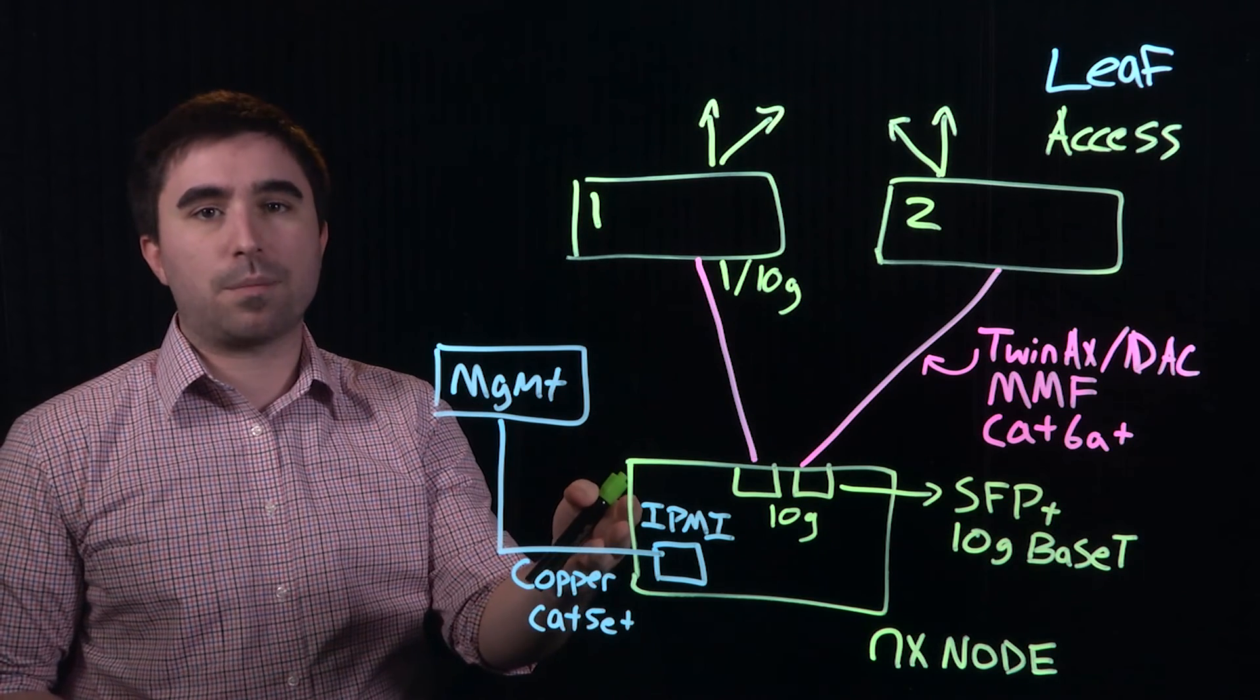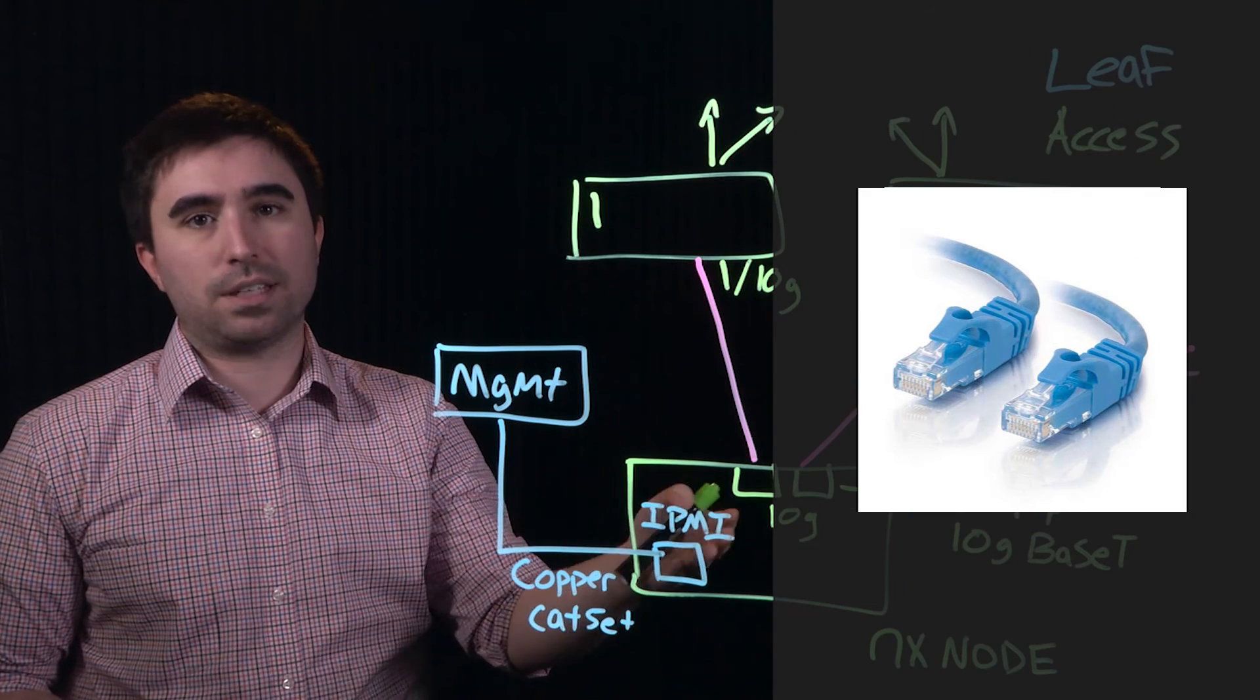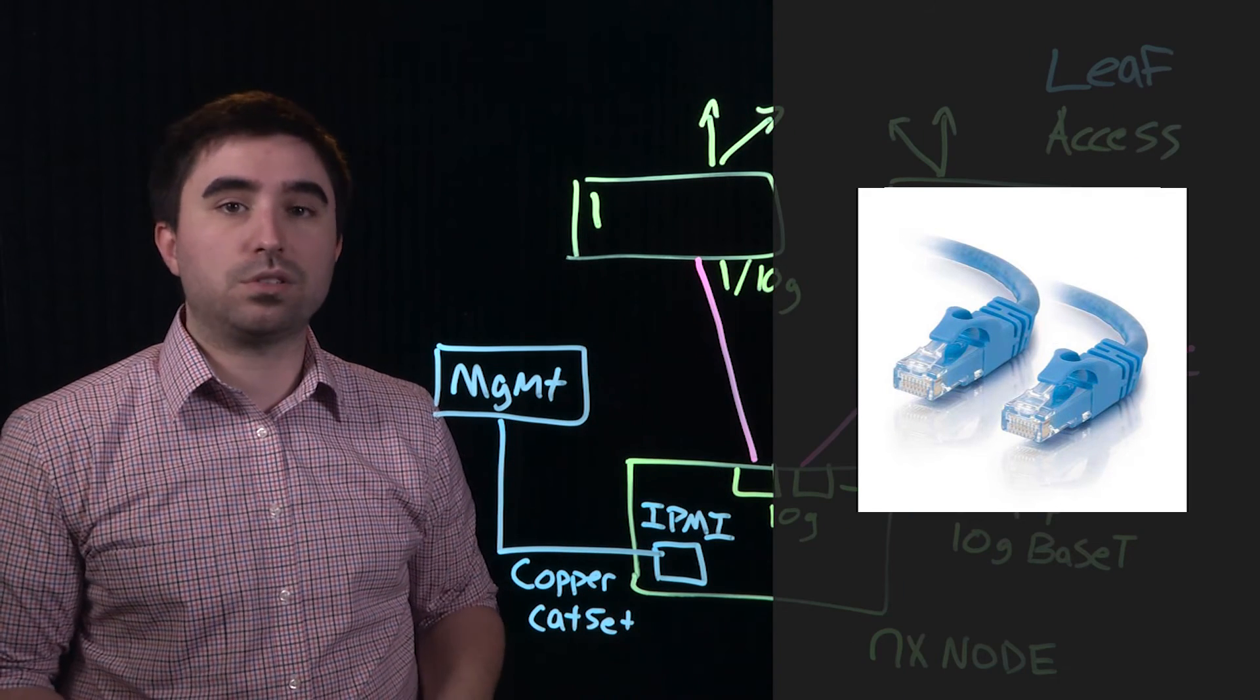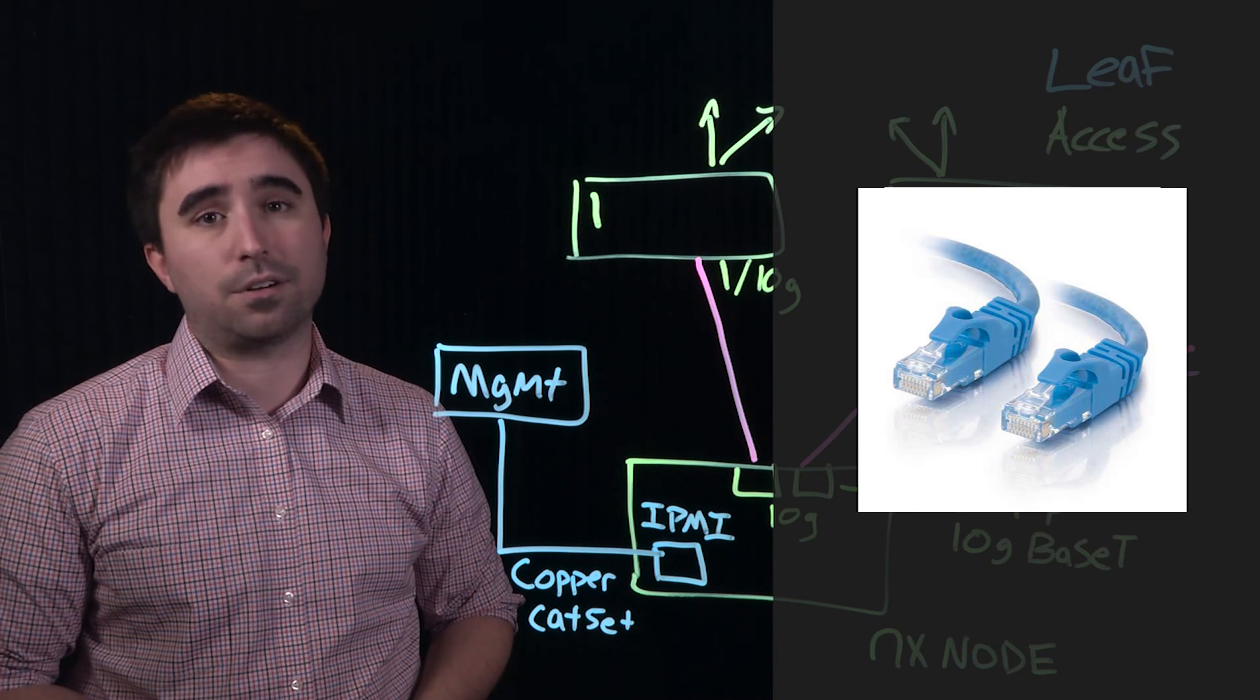The out-of-band hardware management port is connected to the management network over copper, CAT5e or better cable. On most newer models, this is a 1GB port, and on some older models, it's still 100MB.